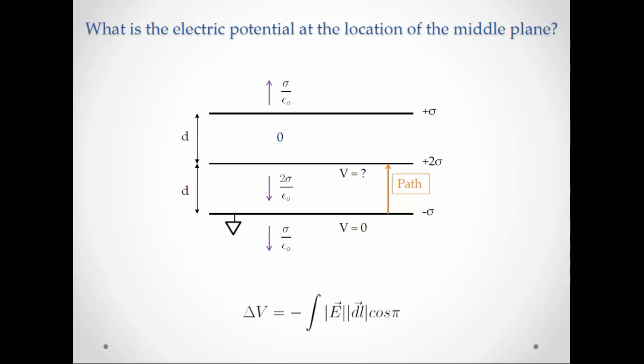We notice that the electric field is pointing down and the path is pointing up. So the angle between them is 180 degrees, or pi, and cosine of pi is negative one. And we also notice that in that region of space, the electric field is constant. So we can pull it out of the integral.